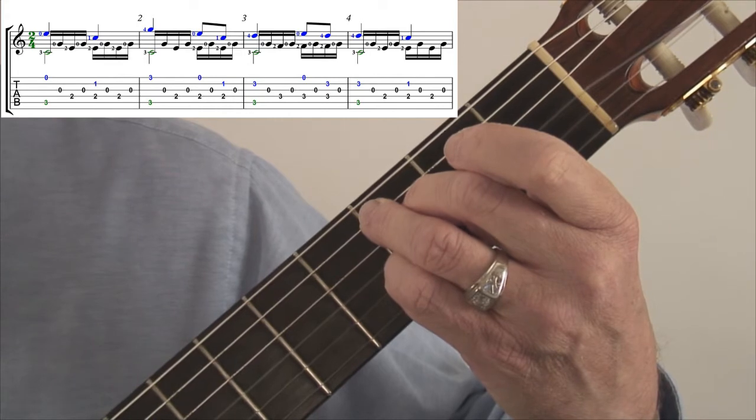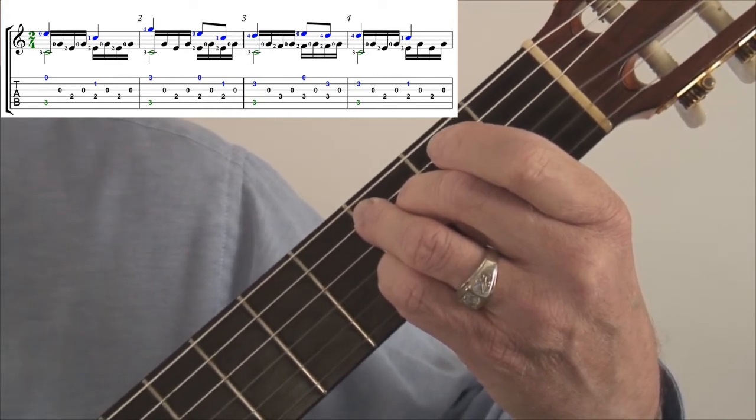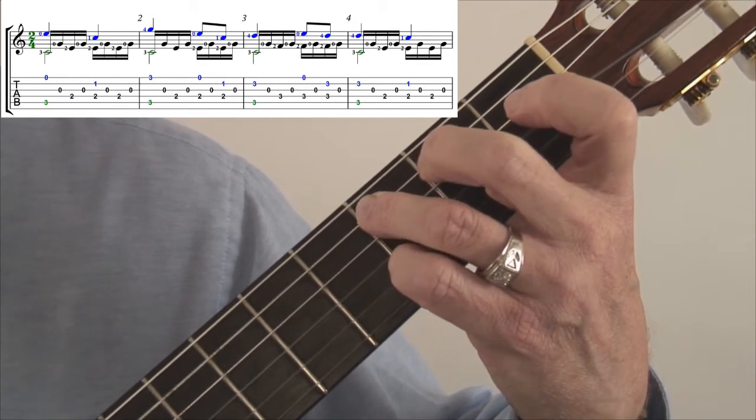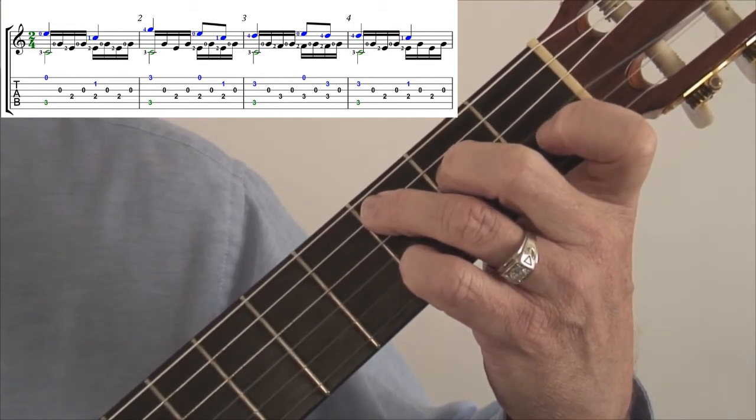Replace the second finger on the fourth string, F. Leave it there. And then downbeat to measure four. Lift the second finger. Reset it on the fourth string on the E. And you're all set.